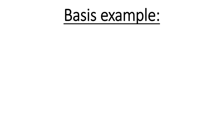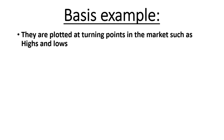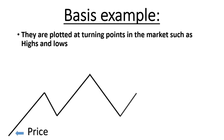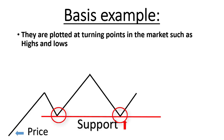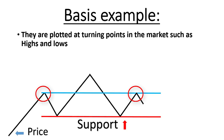Basis example. Support and resistance are plotted at turning points in the market such as highs and lows. Here is a price example: the price goes up, down, up, down, and it forms two bounces on the downside direction. So we have one support here. Then we have two bounces at the same level on the upside direction, so this is our first resistance.